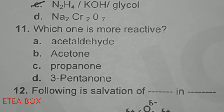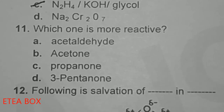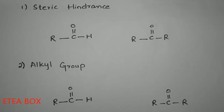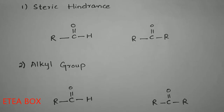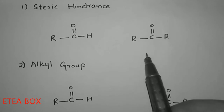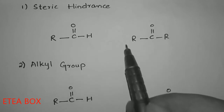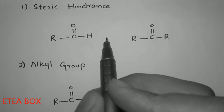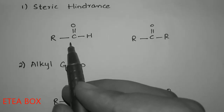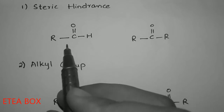Comparing reactivity: acetone is a ketone, and aldehyde is more reactive than ketone, so option A is correct. The first reason is steric hindrance — in aldehyde only one bulky group is attached, while in ketone two bulky groups are attached, so the nucleophile cannot easily attack ketone and preferentially attacks aldehyde.